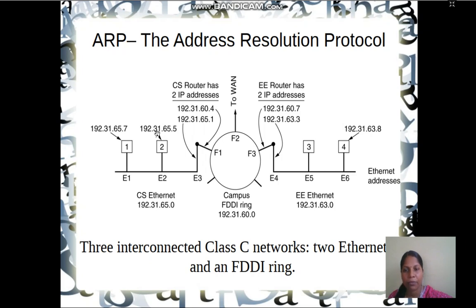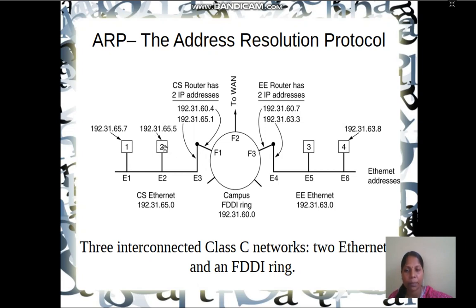To send a packet from one machine to another in Ethernet, the IP address alone is not enough — we also require the hardware address. If machine 1 wants to communicate with machine 2, machine 1 sends an ARP packet asking 'Who has 192.31.65.5? Return your hardware address.' This message is broadcast throughout the network. All machines check the IP address; only machine 2 matches and responds to machine 1 with its hardware address. This is how ARP works.